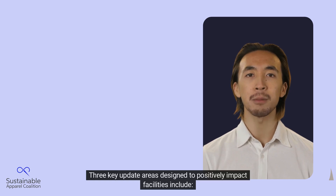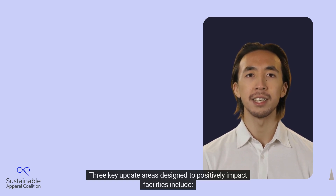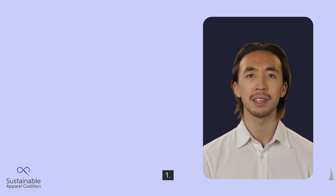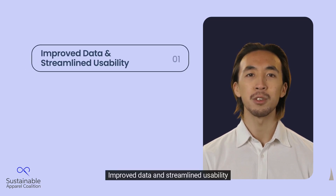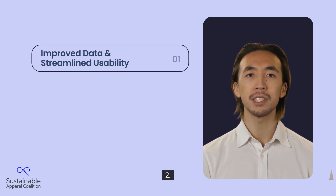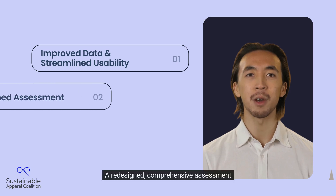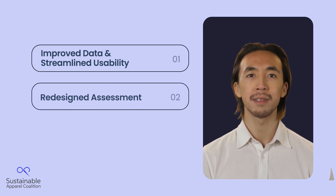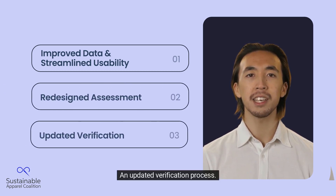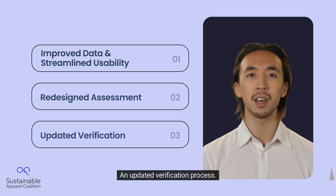Three key update areas designed to positively impact facilities include: 1. Improved data and streamlined usability; 2. A redesigned, comprehensive assessment; and 3. An updated verification process.